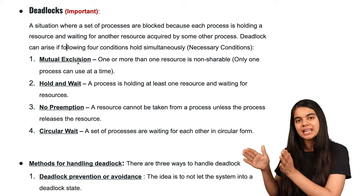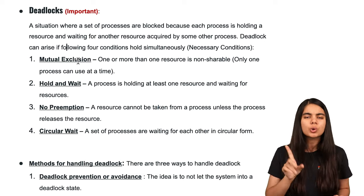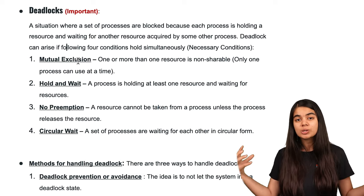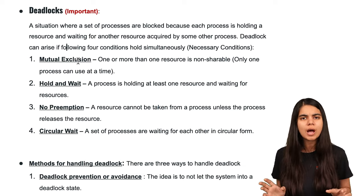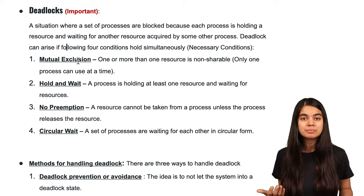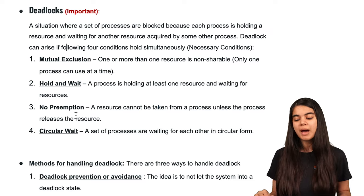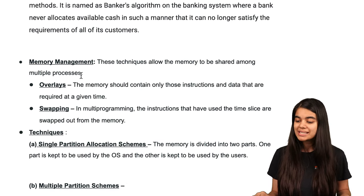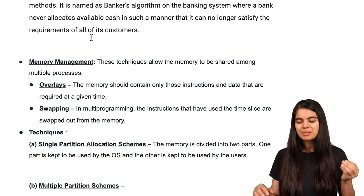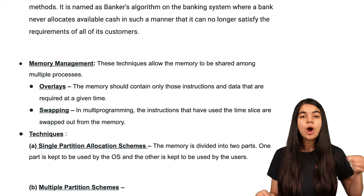What are the methods to prevent such deadlock situations? When multiple processes need the same resources at the same time, what mechanisms does the operating system provide? We have covered that, including the Banker's algorithm, which is an important algorithm we need to know about.